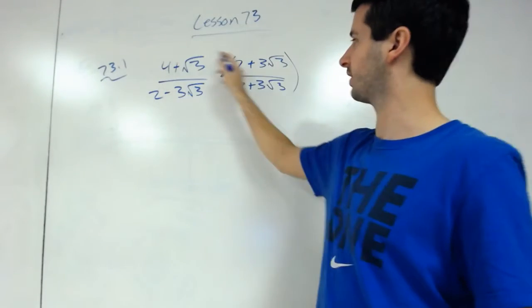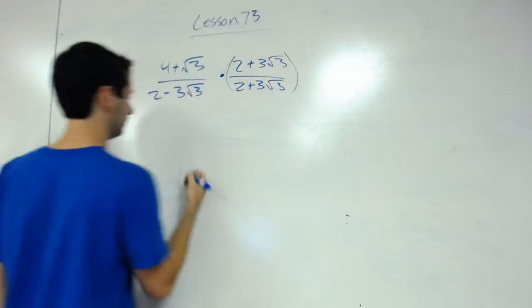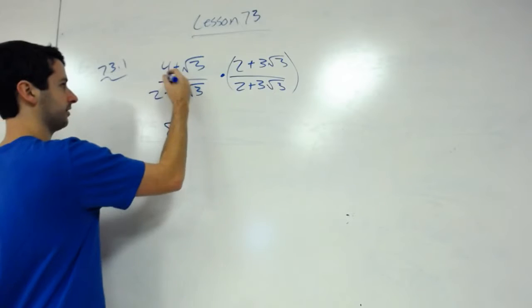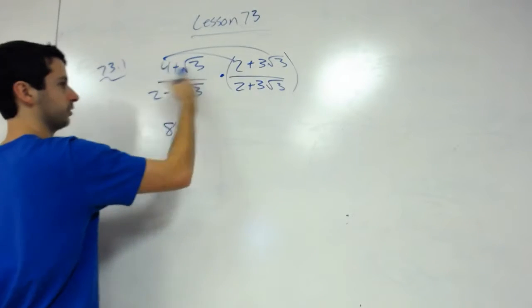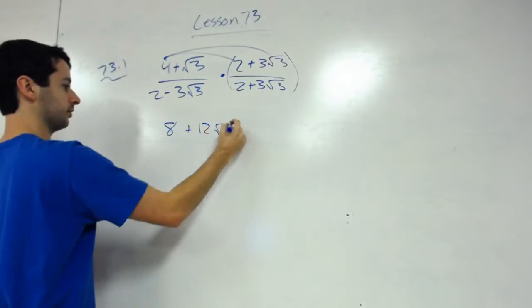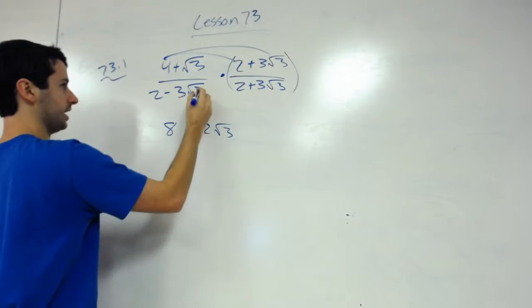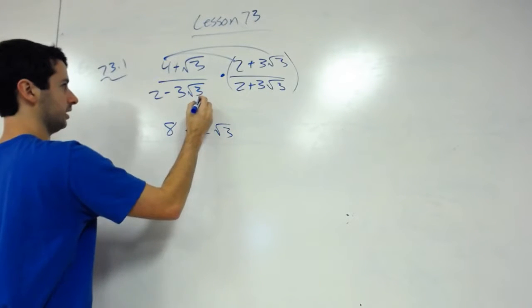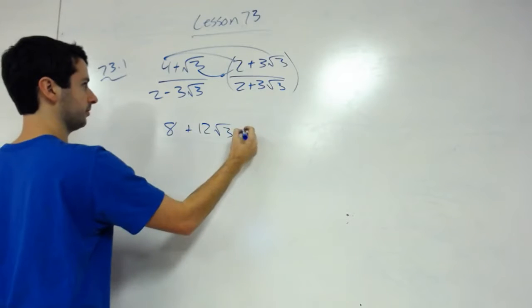First, 4 times 2 is 8. Outside, 4 times 3 is 12√3. Inside here, plus 2√3.